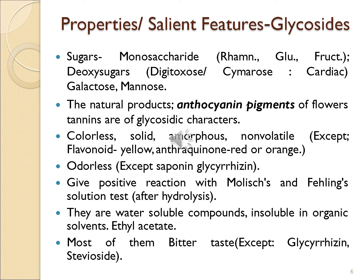All glycosides contain a sugar molecule which can be a monosaccharide or disaccharide. Mostly the sugar is glucose, but it can be rhamnose or fructose. There are special deoxy sugars present in cardiac glycosides, for example digitoxose and cymarose. Others are galactose and mannose.